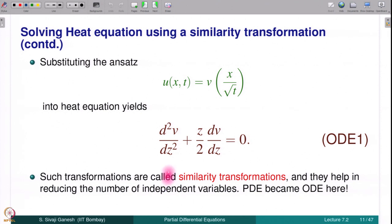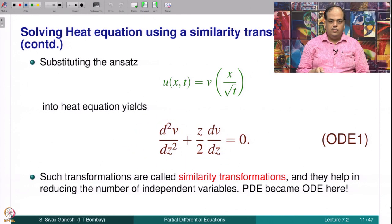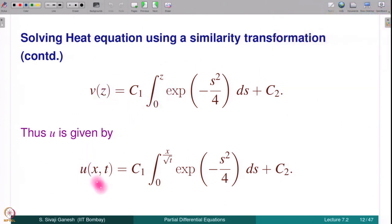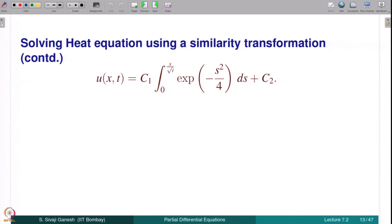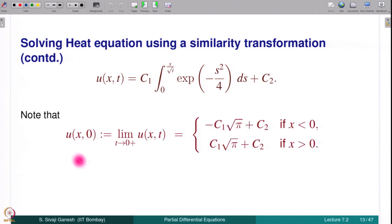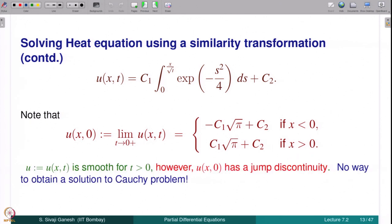When we substitute this ansatz into the heat equation we end up with a second-order ODE which can be fully solved. This is the general solution of the ODE and therefore u(x,t) is expressed in terms of constants c₁ and c₂. We thought we could get the solution to the Cauchy problem by specializing c₁ and c₂, but we found that u(x,0) is given by −c₁√π + c₂ for x negative and c₁√π + c₂ for x positive. So there is no way to solve the given Cauchy problem using this analysis alone.